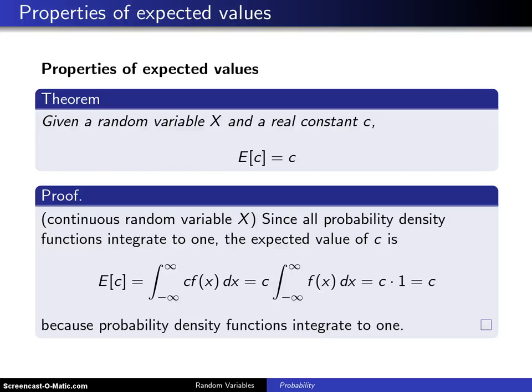To begin with properties of expected value, here is one of the simplest properties out there. Given a random variable X and a constant c, the expected value of c is equal to c.